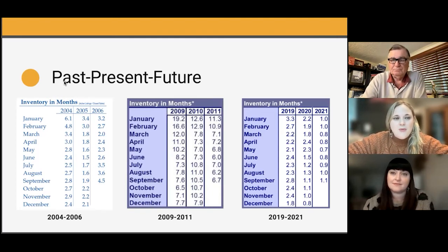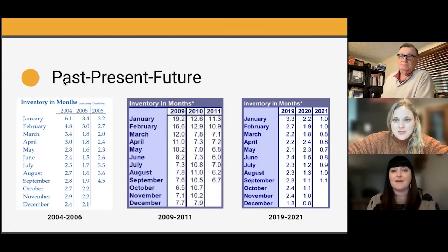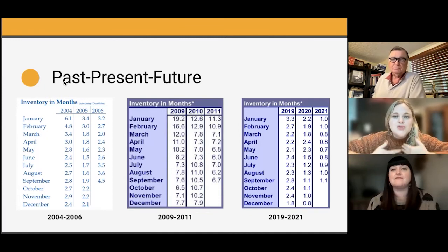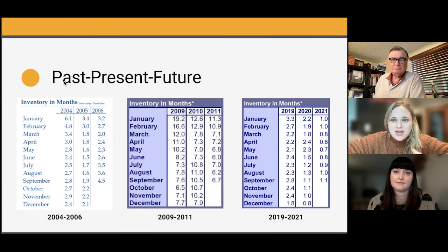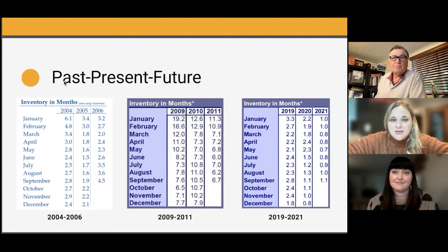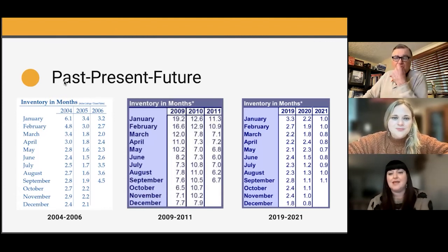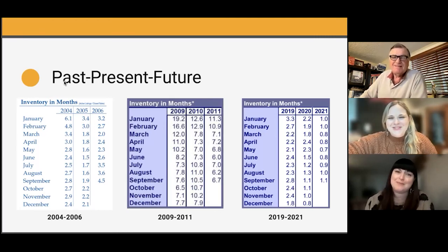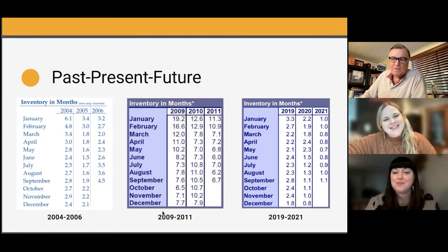It's worth pointing out that back then, five months was considered a balanced market. One big difference today is technology — homes are so much more accessible to view and sell, which has really changed inventory levels and the overall market dynamic. I don't see us going to extremes anytime soon, and honestly I'm not even sure when we'd ever see 19 months of inventory again. Let's hope we don't, because that would be bad times.